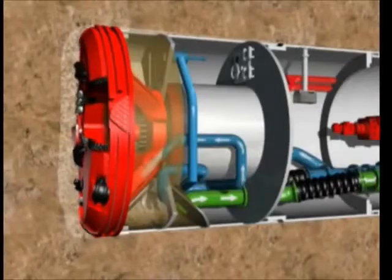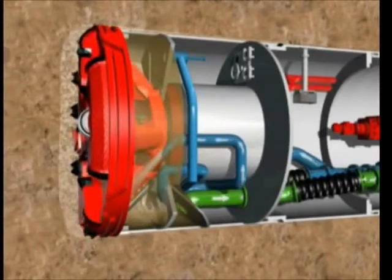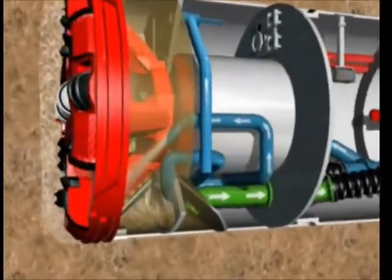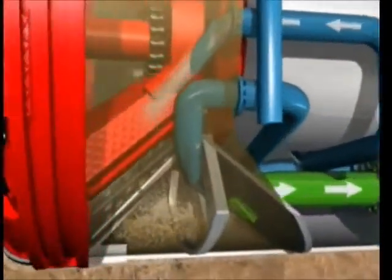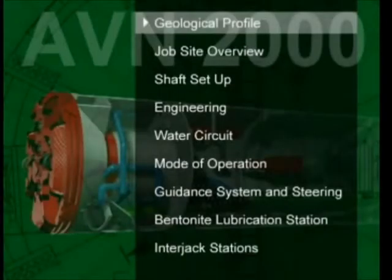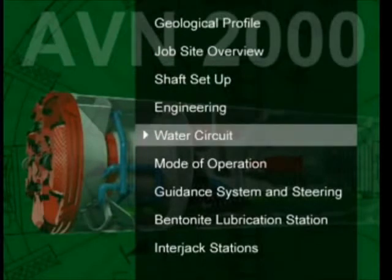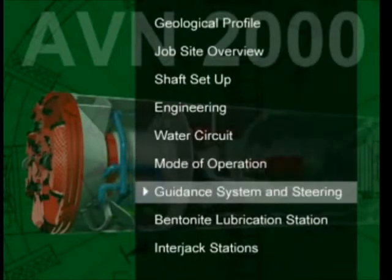The ability to change from slurry to mixed shield mode during continuous operation means that it is possible to tunnel in a wide range of geological conditions and non-homogeneous materials. In the computer simulation that follows you will see the technical requirements from the planning phase through to completion of the pipeline.